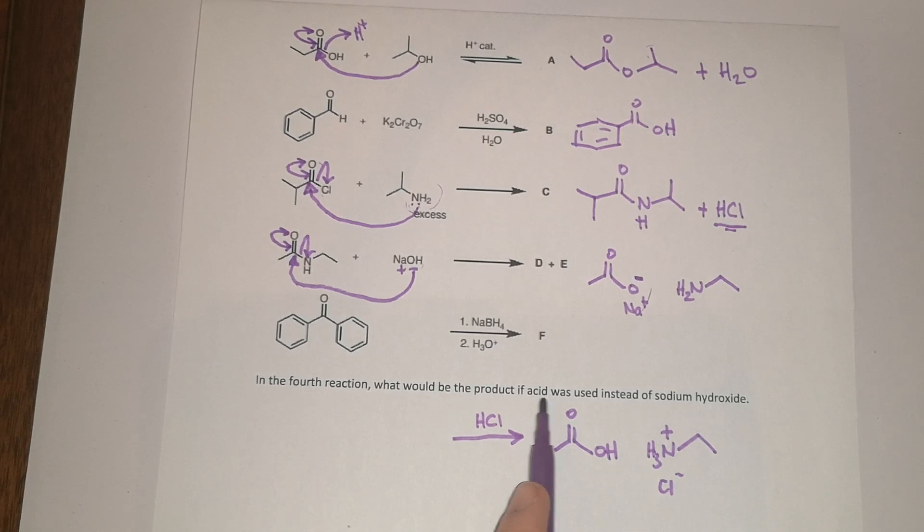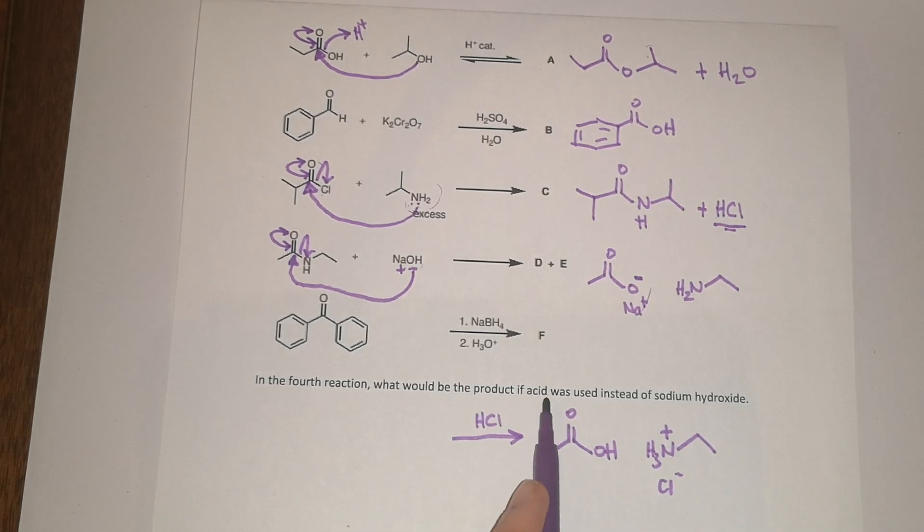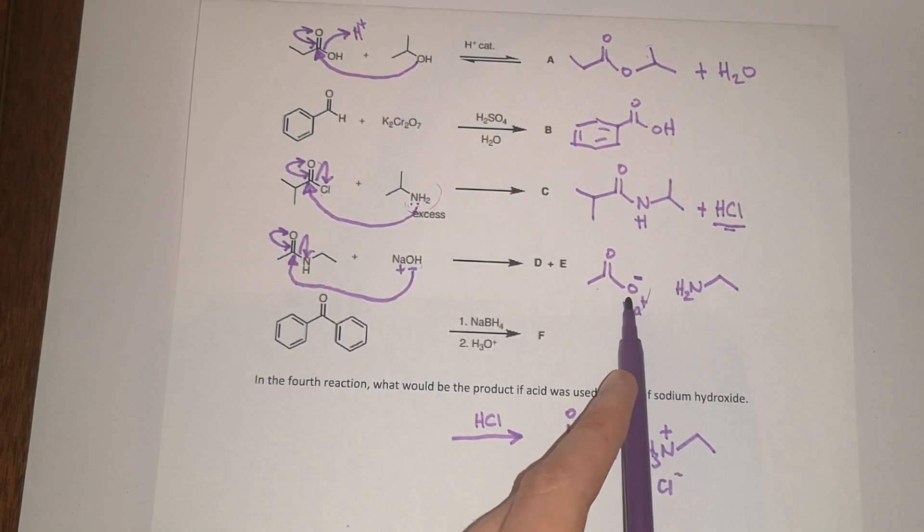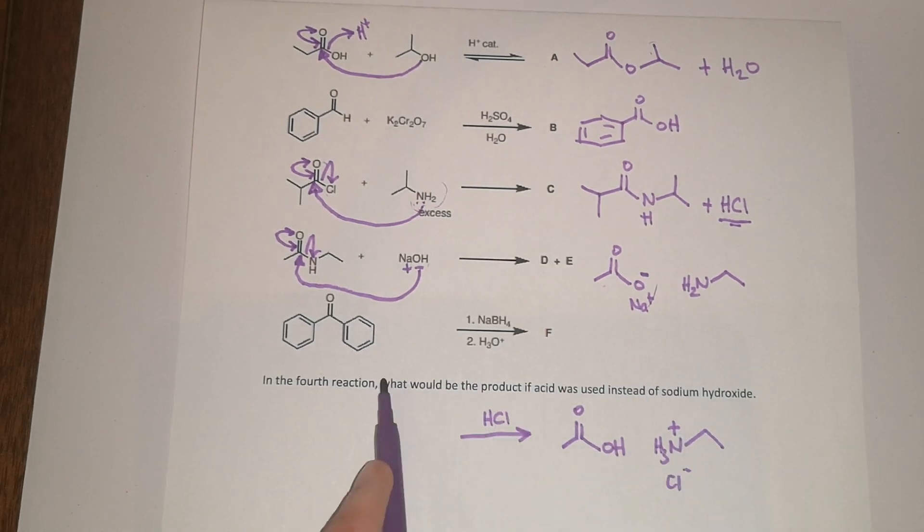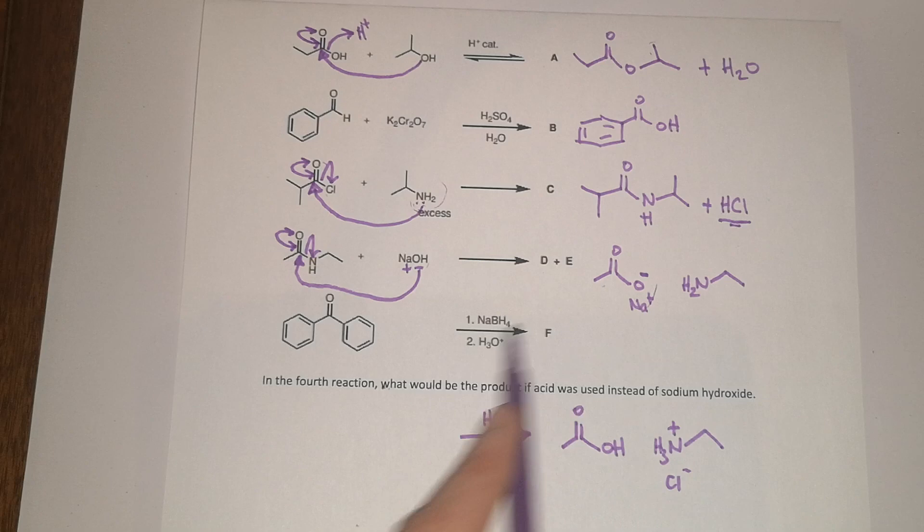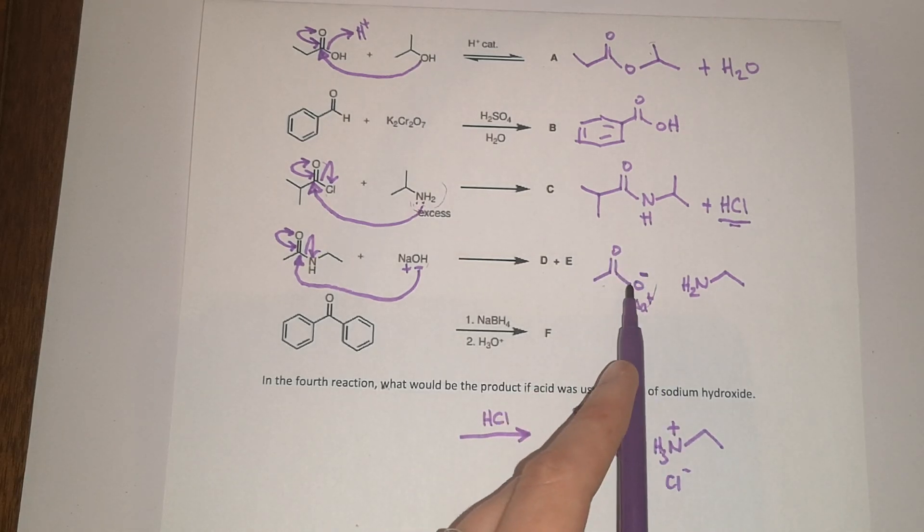This is actually really helpful because what it means is that if someone asks you specifically what would happen if you use an acid instead, it makes you think, oh, well hold on, this should have been a carboxylate not a carboxylic acid. But sometimes this question isn't in the exam, so it's not immediately obvious that you need to remember about this. Pay attention to that.